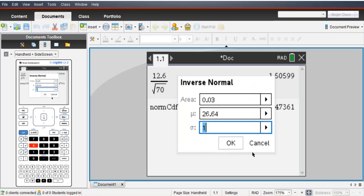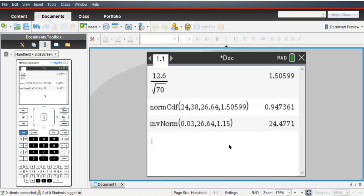So we know the mean is that. Just figured out the sample standard deviation. And 1 minus 0.97 gives us the area. Okay, so that's the age. 24.4771 years.